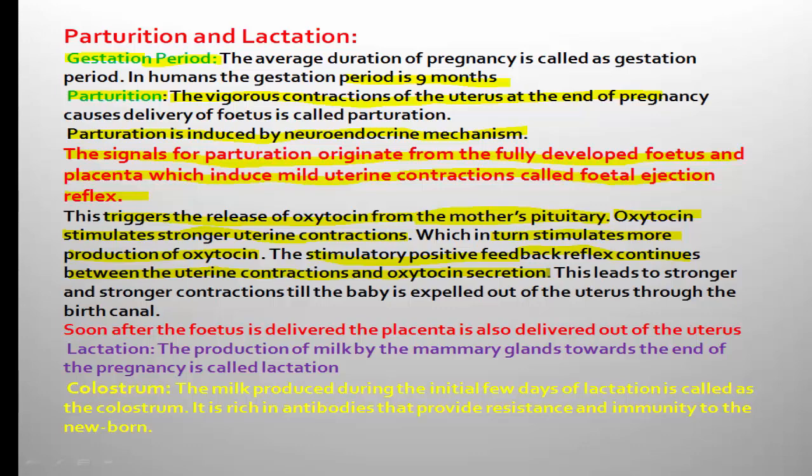However, here in parturition, when uterine contraction increases, when uterine muscles undergo vigorous contraction, it stimulates the pituitary for the production of more oxytocin. More uterine contraction leads to more production of oxytocin — that is why parturition is an example of positive feedback, and it continues between uterine contraction and oxytocin secretion.